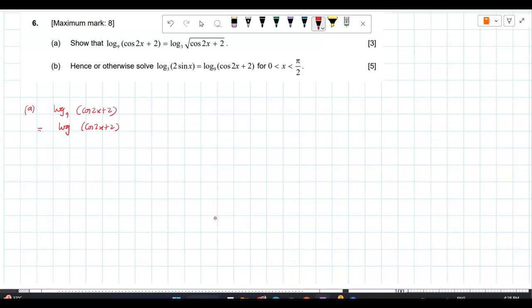Log cos 2x plus 2 upon log 9. Correct? Upon log 9. And I am choosing the base for each of them as 3. Correct? So, that is your change of base here.